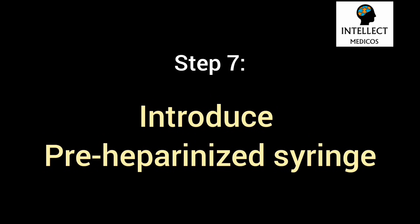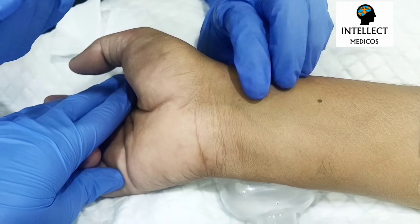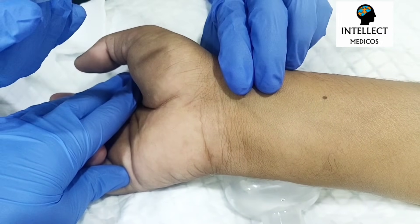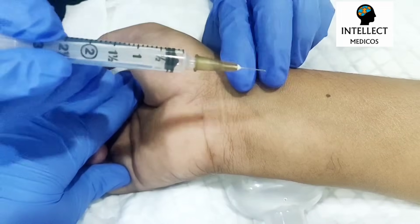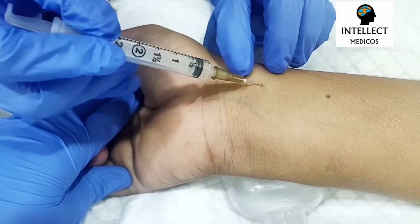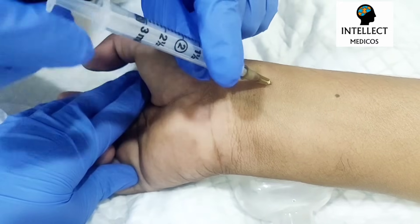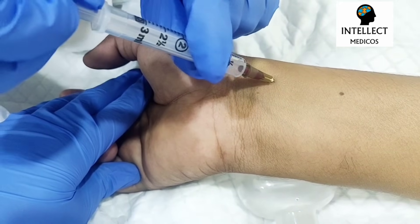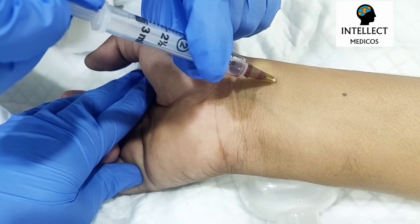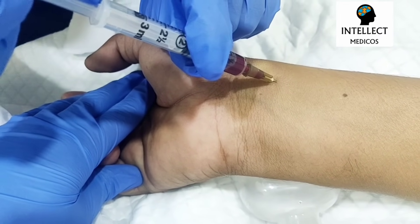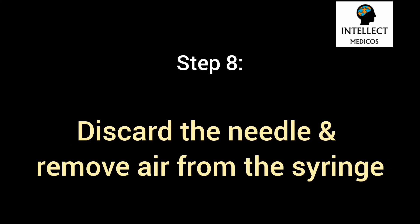Step 7: Palpate the radial artery, hold the pre-heparinized syringe in the other hand, and insert the needle at a 45-degree angle. Ideally you should see blood in the hub, but with a 26-gauge needle you may need to pull the plunger slightly — you can then see the blood. Step 8: Discard the needle and remove any air from the syringe.